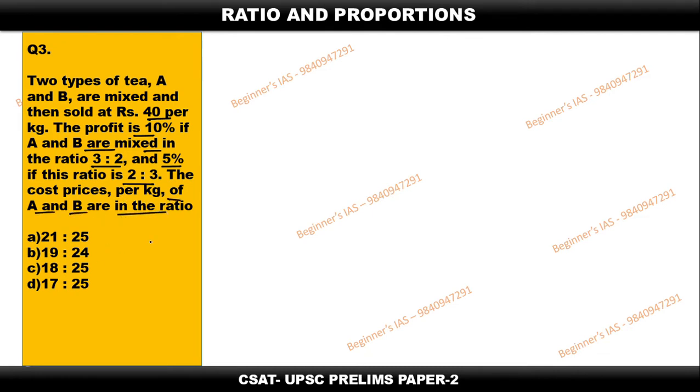The cost prices per kg of A and B are in the ratio - we need to identify this ratio. Here, just assume we don't know the cost price. I'm taking A's cost price as rupees a and B's cost price as rupees b. What we need to identify is very important: find a:b.